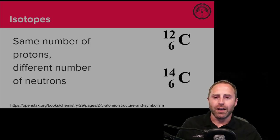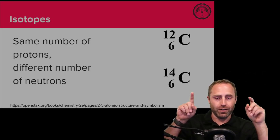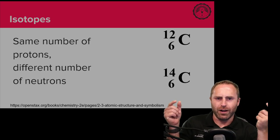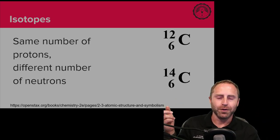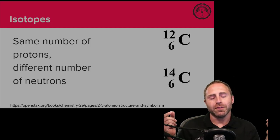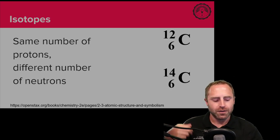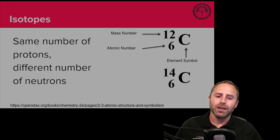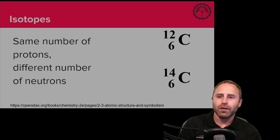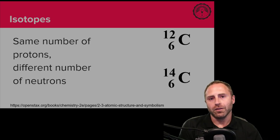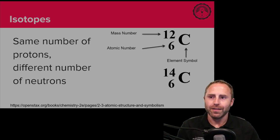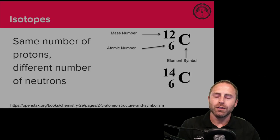The key thing about an isotope: for you to have isotopes you're going to have two substances. They have the exact same number of protons but they have different neutrons. The example we have here on the screen is C-14 and C-12, and C is the symbol for carbon.